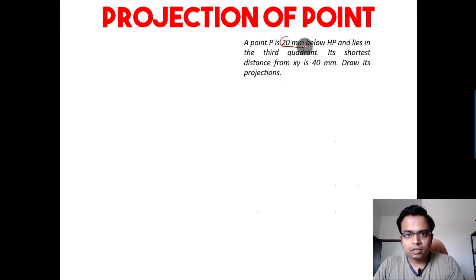So this dimension right over here is what we refer to as H. Second thing is its shortest distance from xy is 40 millimeters.